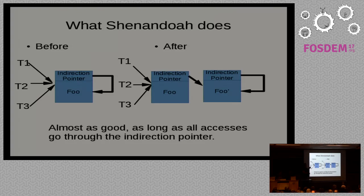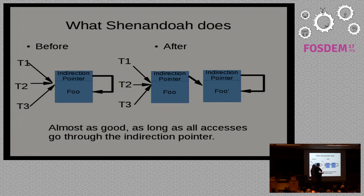The secret sauce in Shenandoah — which isn't really secret sauce — is that we've added an indirection pointer to every object. This increased the size of every object, but the power it gives you is worth it. You have a few threads pointing to Foo. The garbage collector makes a speculative copy of Foo and does a CAS to change the indirection pointer to point to Foo prime. So anytime anybody accesses this object — before the CAS they get the old copy, after the CAS they get the new copy. Whether they're in another thread stack or somewhere deep in the heap, they're always going to have the current copy of Foo.